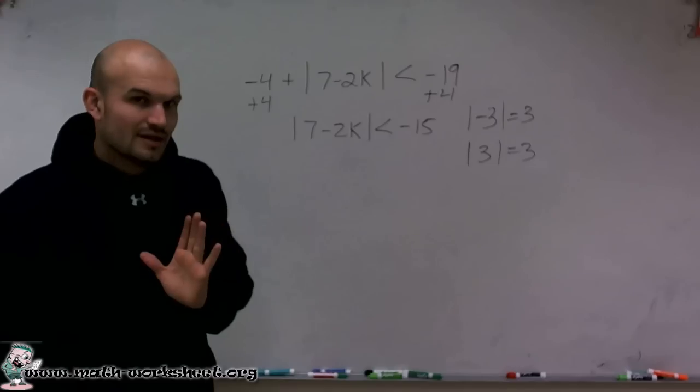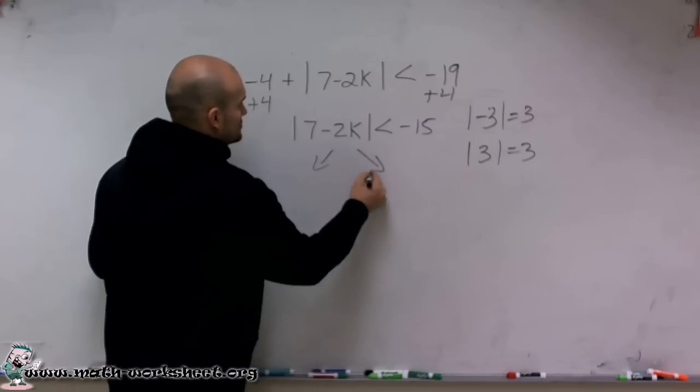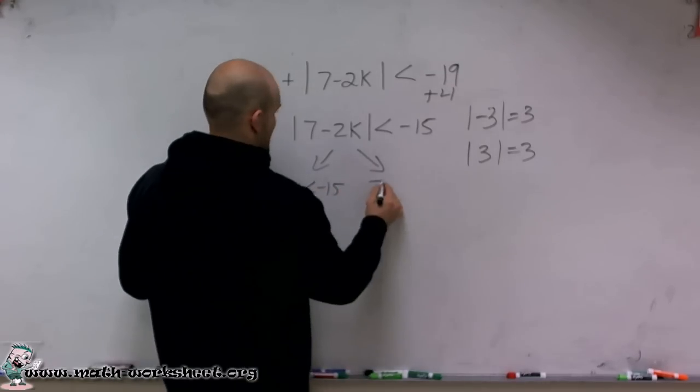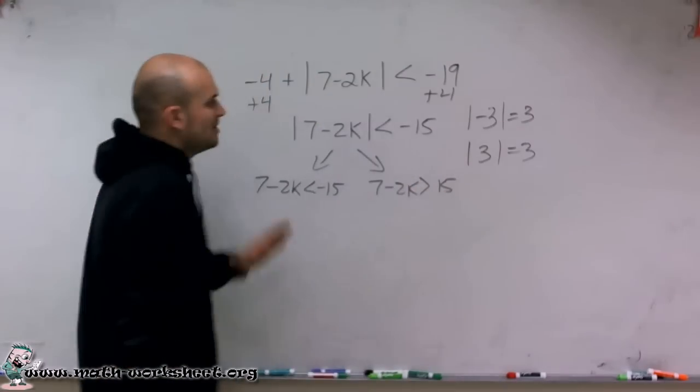Now, here's what we need to look at. Usually what we do is we'd set up our two solutions, right? Which we look at 7 minus 2k is less than negative 15, and 7 minus 2k is greater than positive 15. But here's our problem,